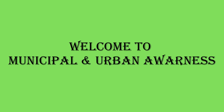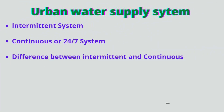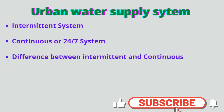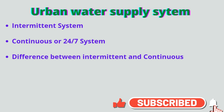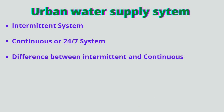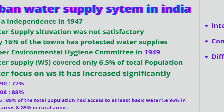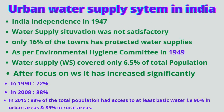Welcome to the Municipal and Urban Awareness YouTube channel. Today we will discuss some information regarding urban water supply systems — specifically the definitions of intermittent system and continuous system, or 24x7, and the difference between both. Before that, we need to know the background of the water supply system in India.